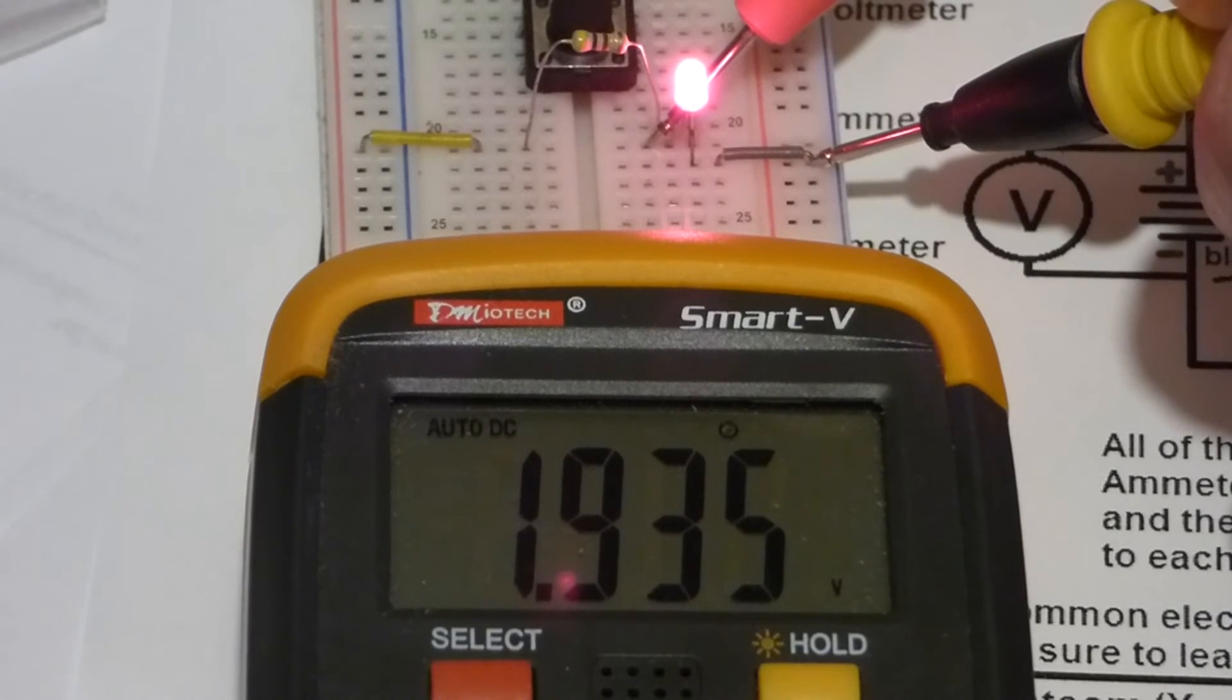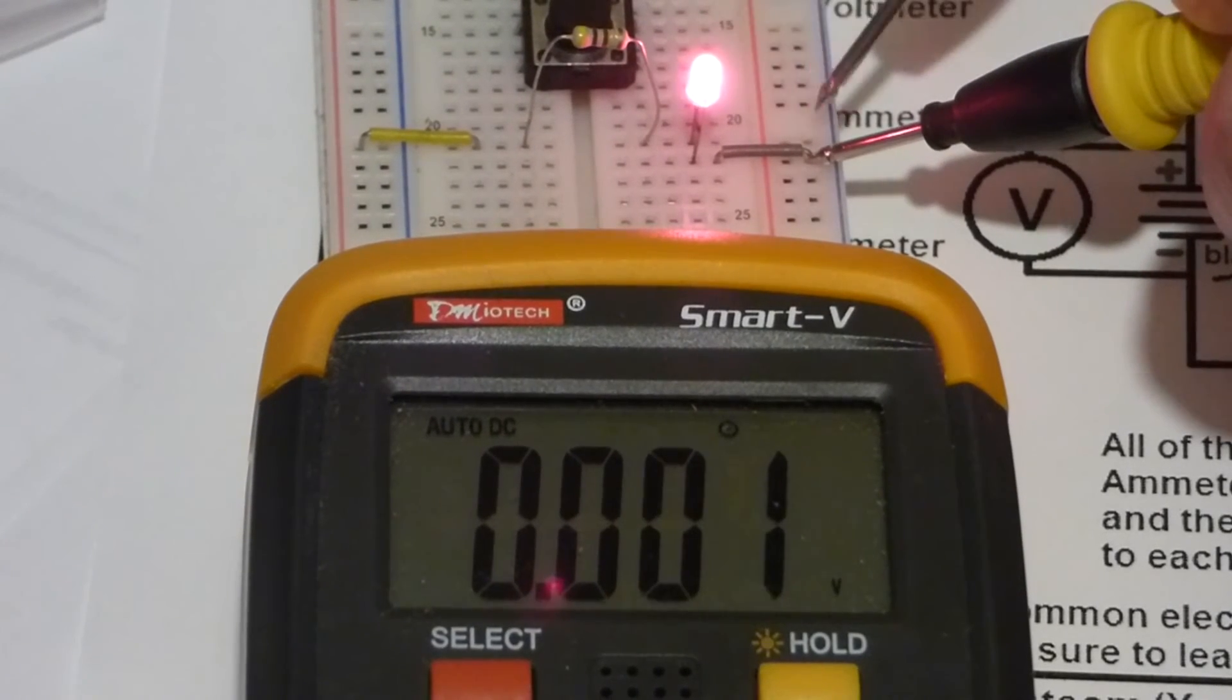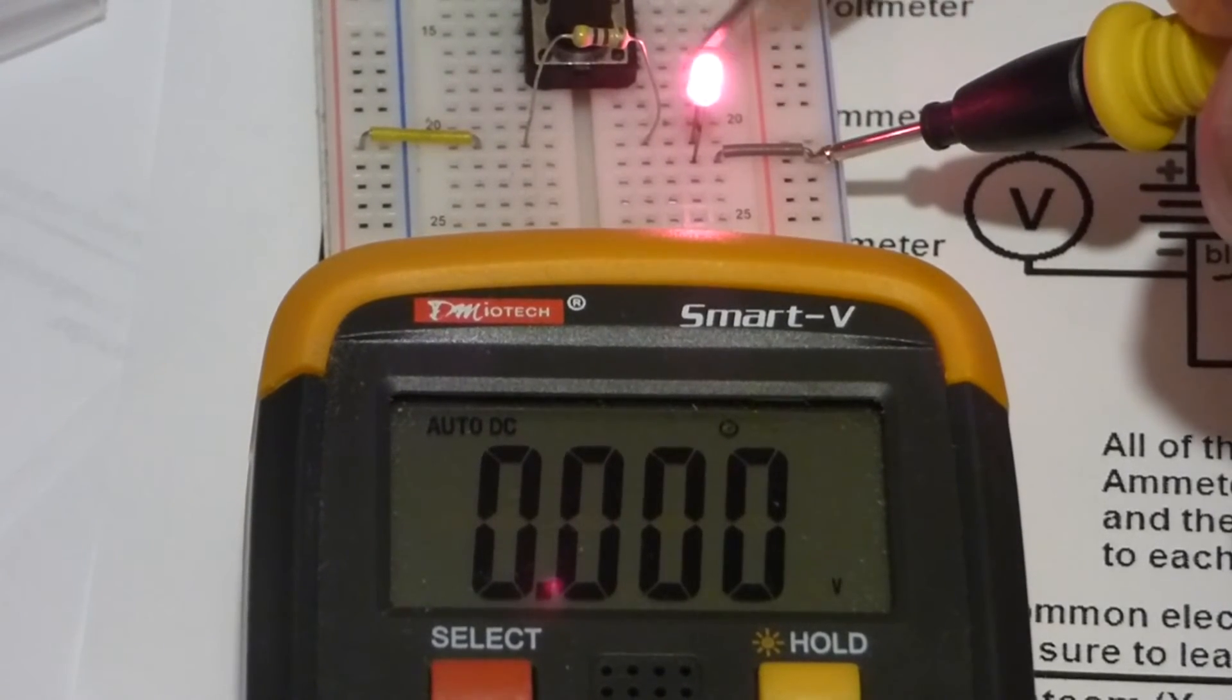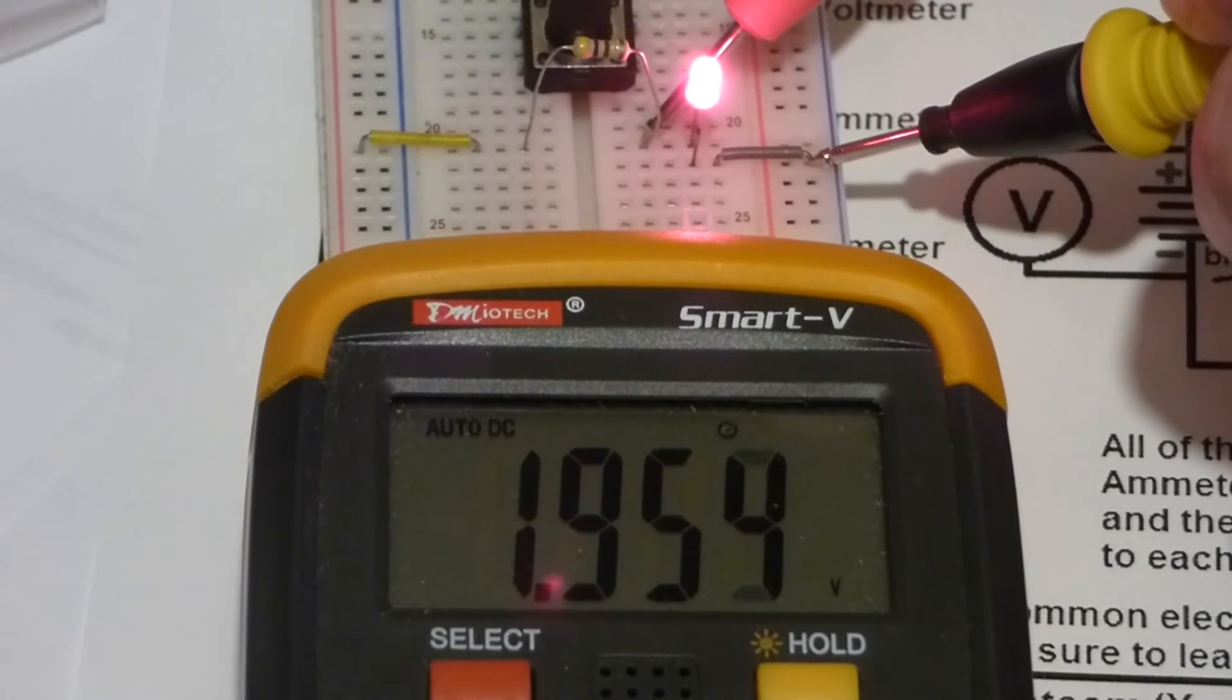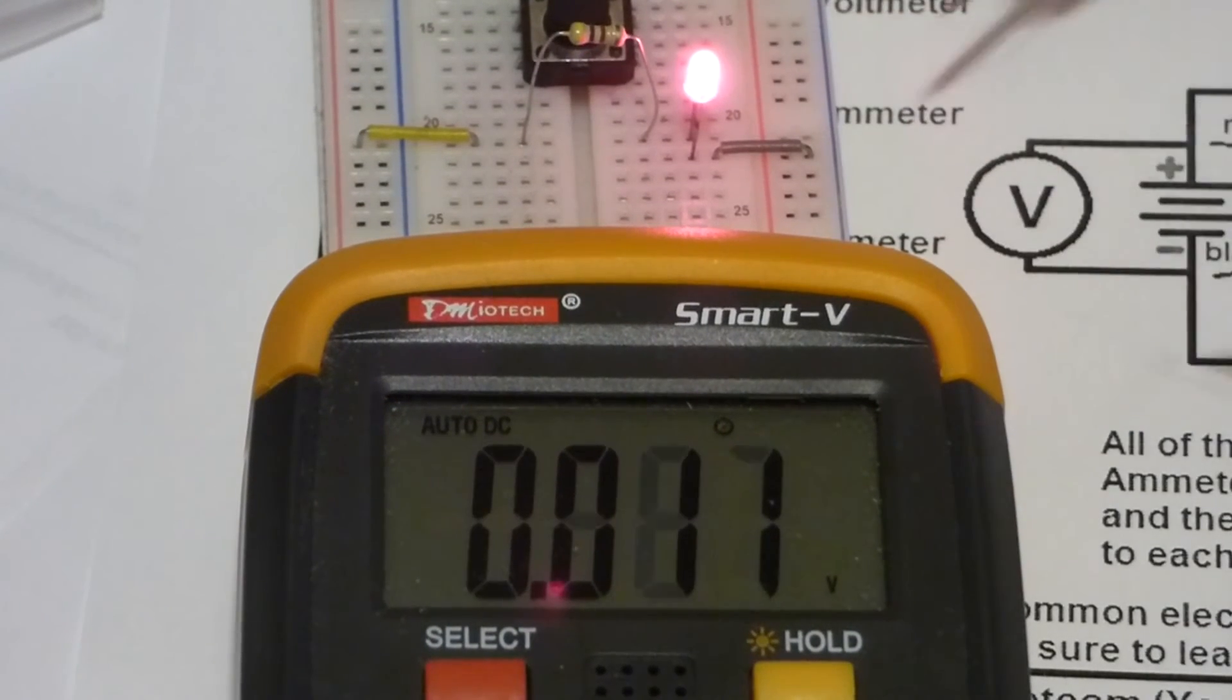So from this point to here there's about two volts. We formed a voltage divider—that's a future topic. But as you can see, you can measure multiple points in a circuit and this is a simple circuit, that's not many points to measure.